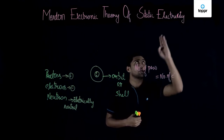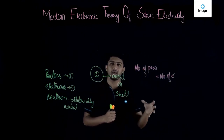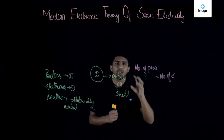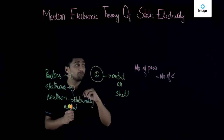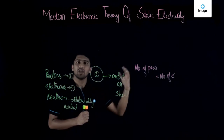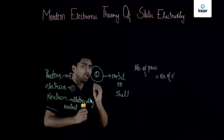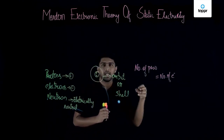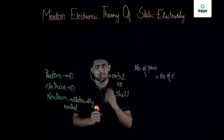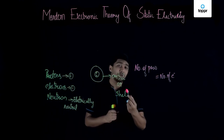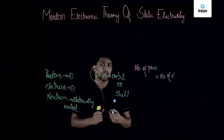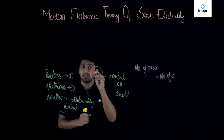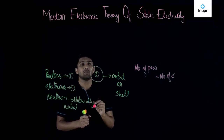We are learning about static electricity. When we transfer charges from one body to another, either the number of protons or the number of electrons in a body will change. When an atom accepts an electron, the number of electrons will be more than the number of protons. In that case, the total net charge of that particular atom will be negative, because it now has more electrons.